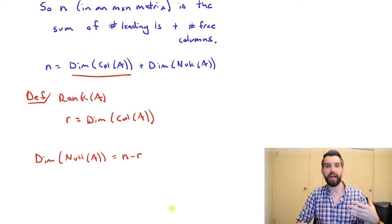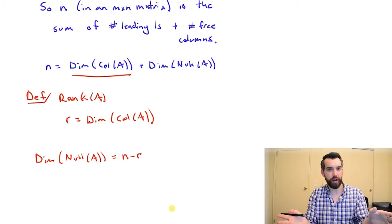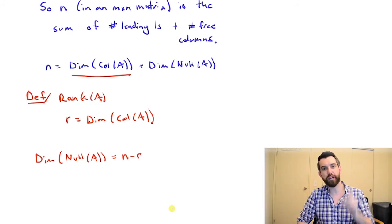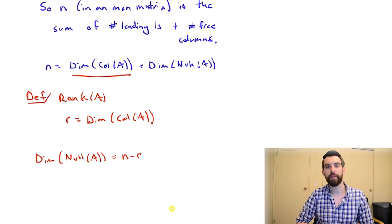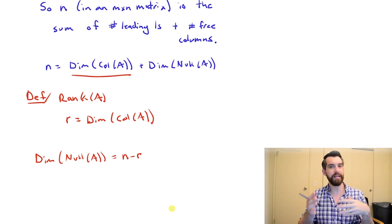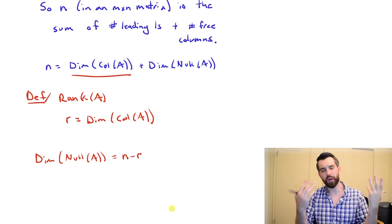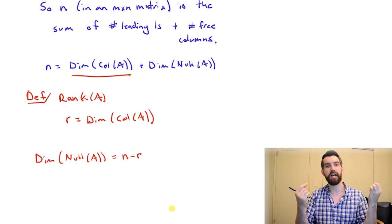In essence, what we've done is we've taken some matrix and we've associated to the matrix one integer called the rank. And this integer plays a really nice interplay between the dimensions of the column space and the dimensions of the null space.